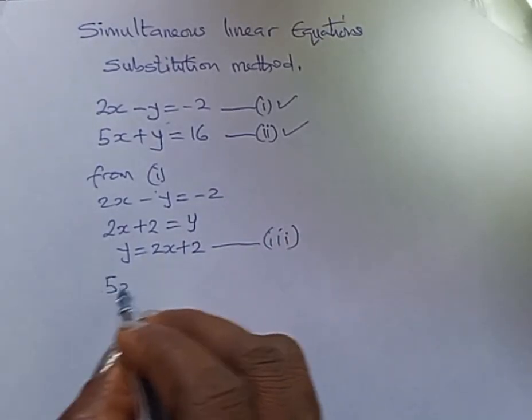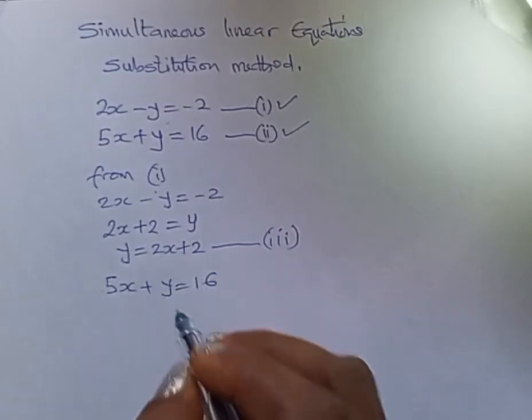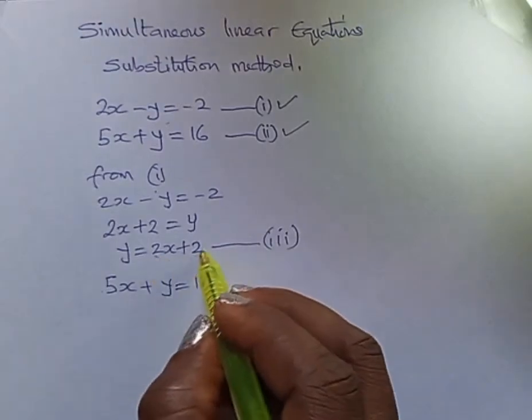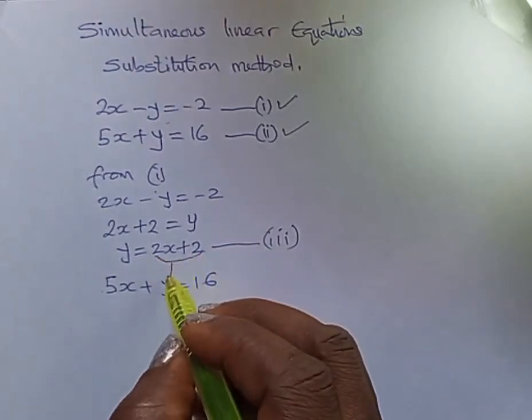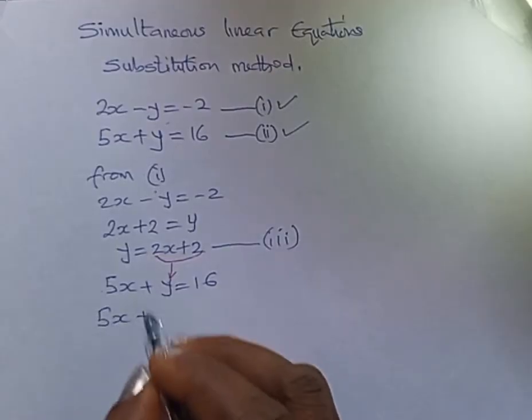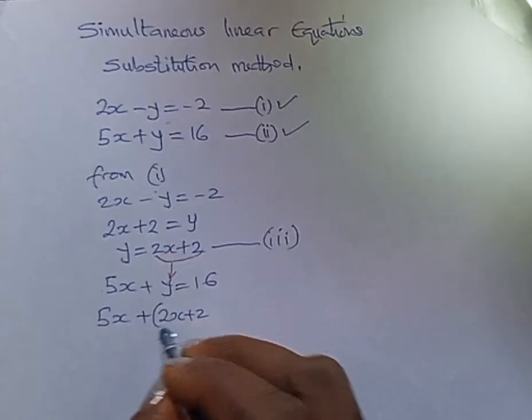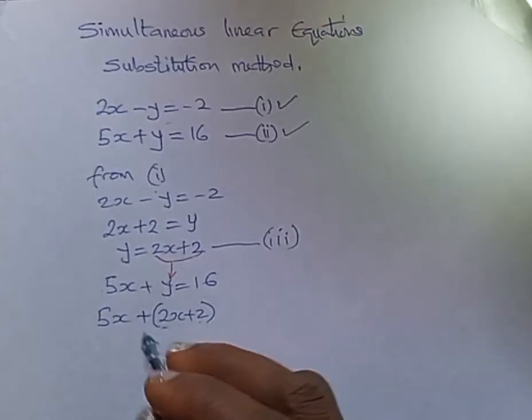That is 5x + y = 16. So y is becoming this immediately. We are changing our y to be this. It's coming in. So we have 5x plus then the y, that's 2x + 2, and the bracket is going to be plus.